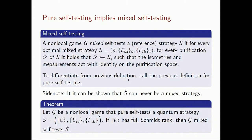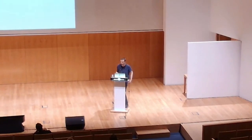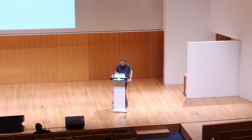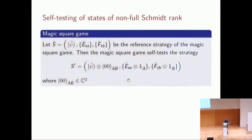Finally, there are examples of pure self-tests that do not have full Schmidt rank. A simple example is taking the magic square game and appending an additional tensor factor in a higher space that we do not measure — it has no impact and can be extracted from the reference strategy. And that is mostly what I wanted to cover — thank you.